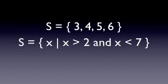Now the line in between the x's is usually translated as such that. So if I'm reading from left to right, I would say, S equals x such that x is greater than 2 and x is less than 7.